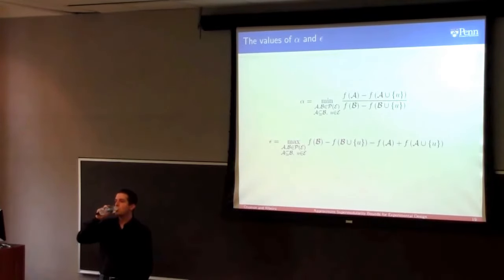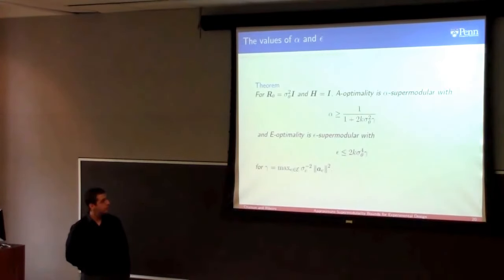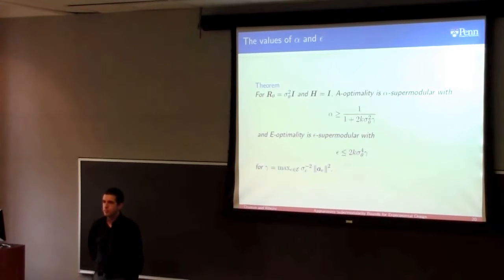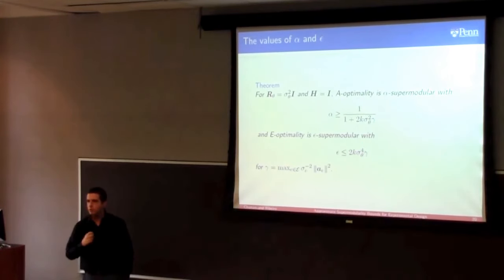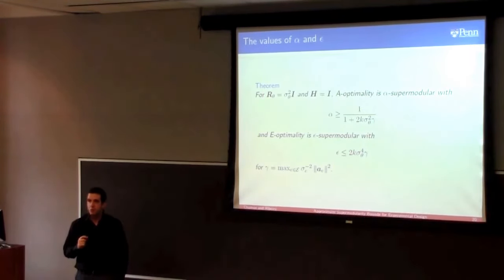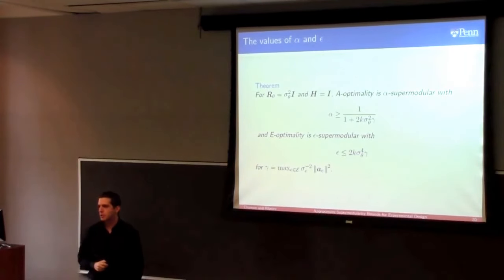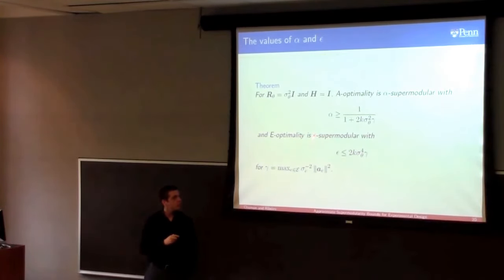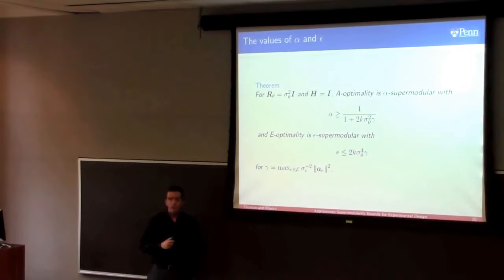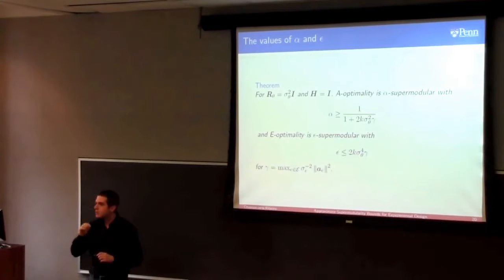Q: The bound on alpha and epsilon — does it depend on whether you use A-optimality or E-optimality? A: Yes, we have one bound on alpha for A-optimality and one bound on epsilon for E-optimality. The epsilon bound for A-optimality is easy to calculate using the general homotopy technique, which works for any cost function but gives weaker guarantees. The alpha bound for E-optimality — I don't have one. For alpha, it requires a technique specific to each cost function, giving better but function-specific guarantees.